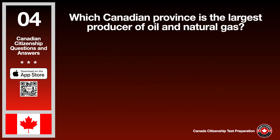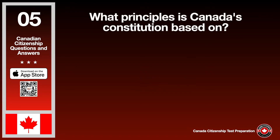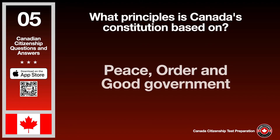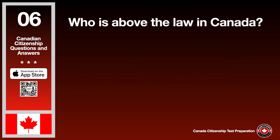Which Canadian province is the largest producer of oil and natural gas? The answer is Alberta. What principles is Canada's constitution based on? The answer is peace, order and good government. Who is above the law in Canada? The answer is no one.